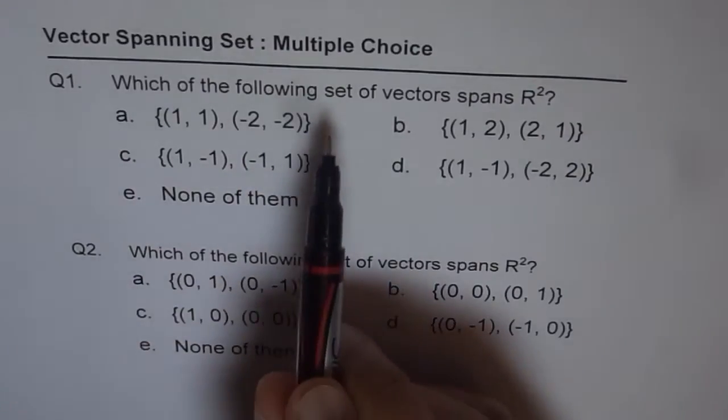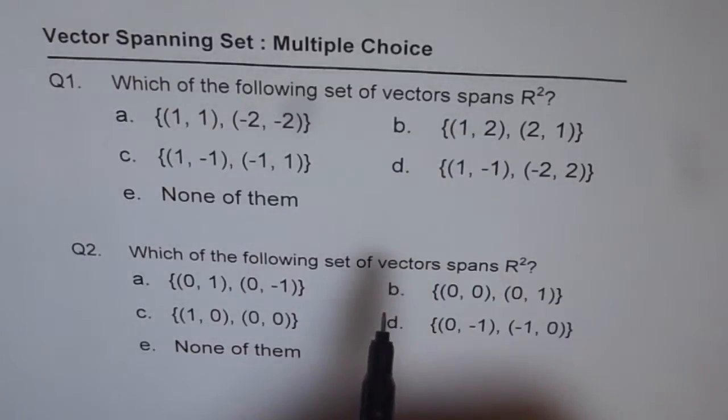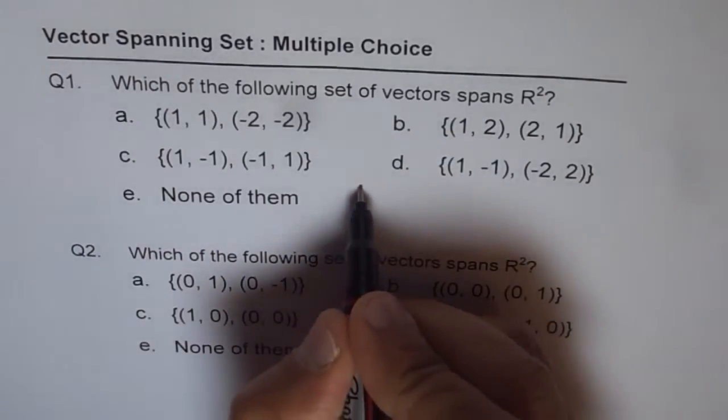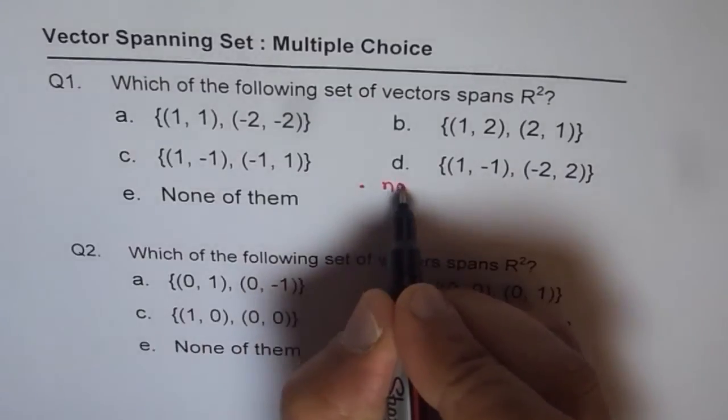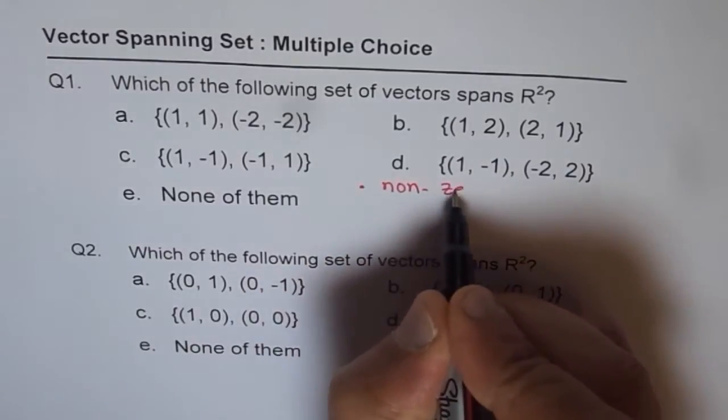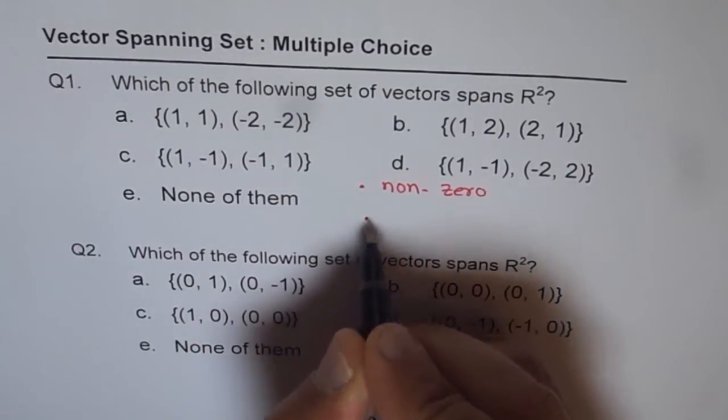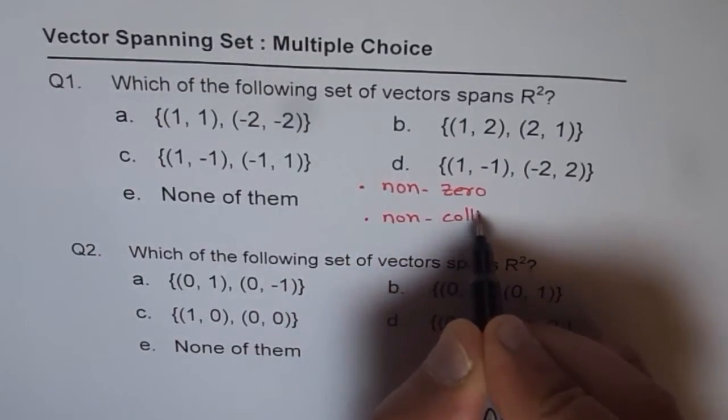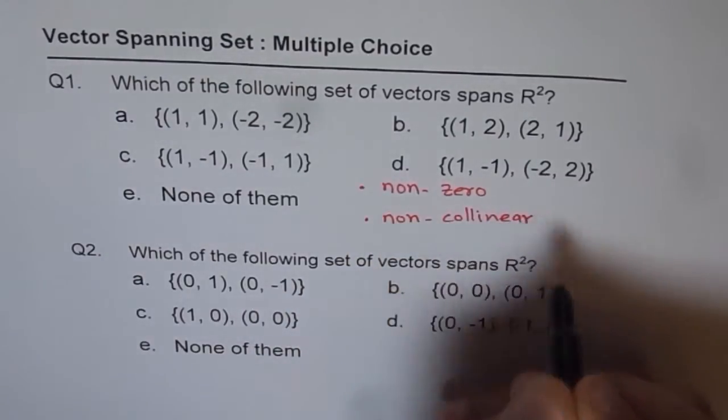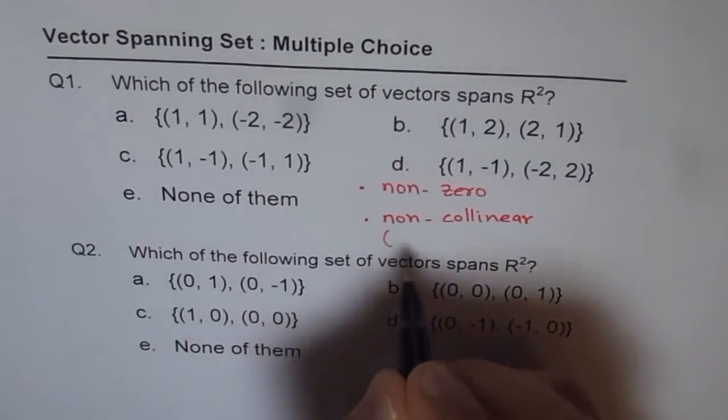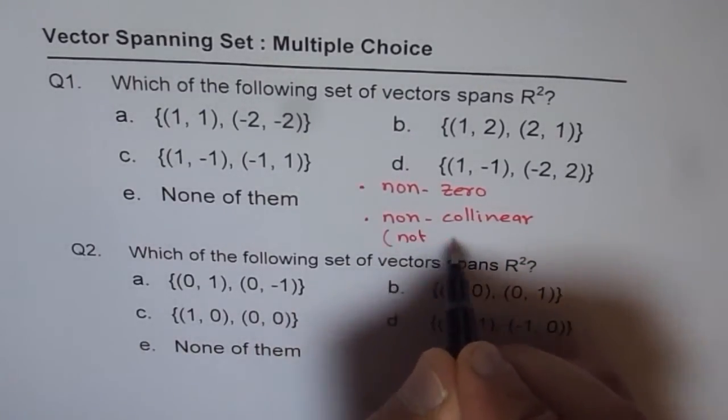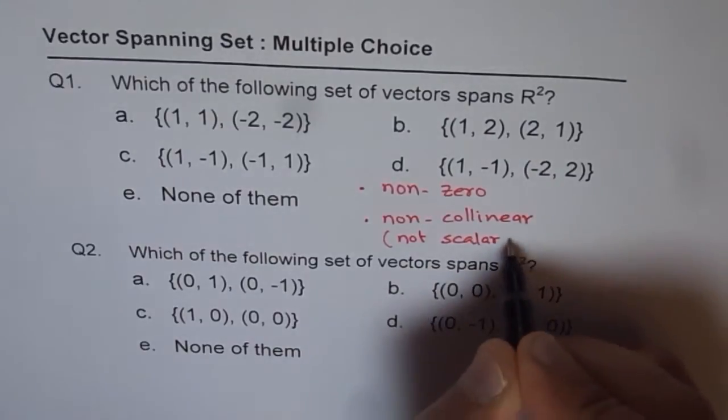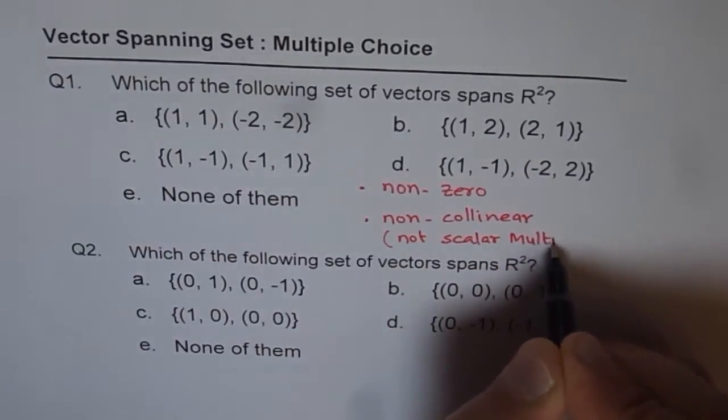When we say that the set of vectors can span in R2 it means two things. First they should be nonzero, and second is non-collinear. That means not scalar multiple. That is what we are trying to check right, not scalar multiple.